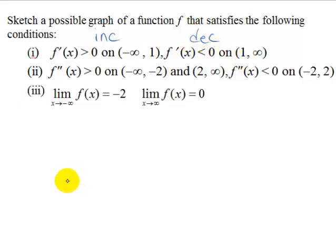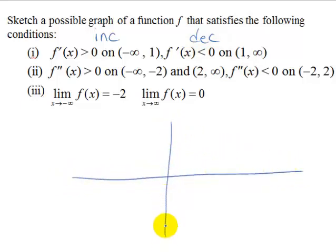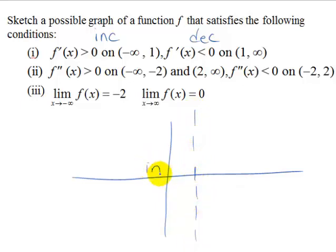Let's go ahead and draw our axes and the start of our function. On the interval from 1, this is going to be our cutoff point, so I'm going to mark this. We know that to the left of this the function is increasing, and to the right of this the function is decreasing.